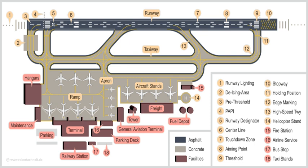Airline lounges frequently offer free or reduced-cost food, as well as alcoholic and non-alcoholic beverages. Lounges typically have seating, showers, quiet areas, televisions, computer, Wi-Fi and internet access, and power outlets. Some airline lounges employ baristas, bartenders and gourmet chefs. Airlines sometimes operate multiple lounges within one airport terminal, allowing ultra-premium customers such as first-class customers additional services not available to other premium customers, and to prevent overcrowding of lounge facilities.